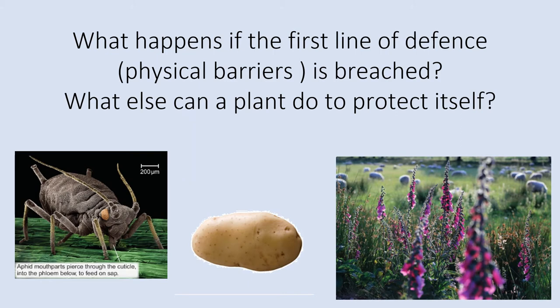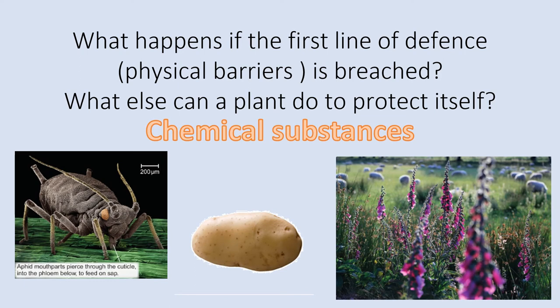What happens when these physical barriers get breached? There's a picture of a potato there — it does serve a purpose. What can a plant do if it can't physically protect itself? If a pathogen gets through one of those defences quickly, or if a pest gets past any of those defences, what can a plant do to further protect itself? Well, it is, of course, chemicals. Plants use chemical warfare — they have been doing so for years, and it is incredibly effective and incredibly useful.